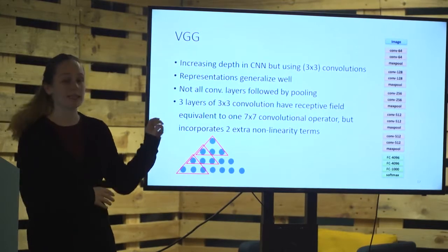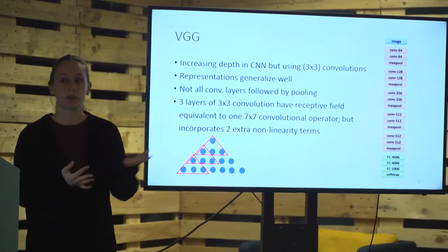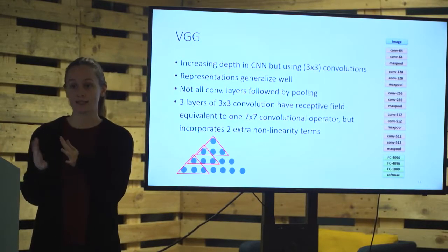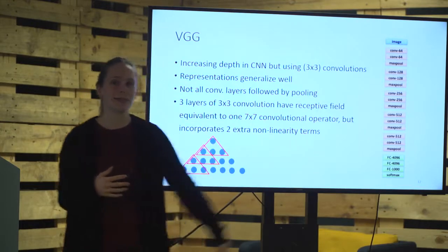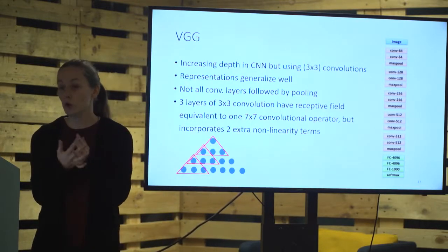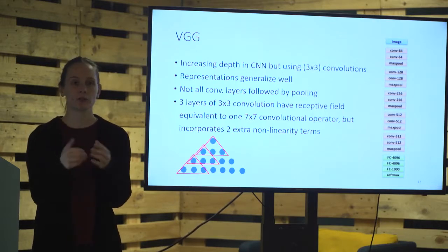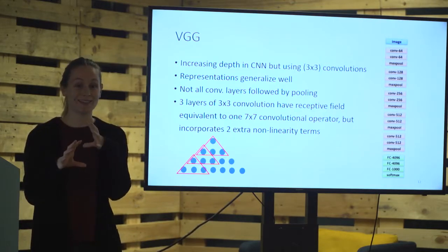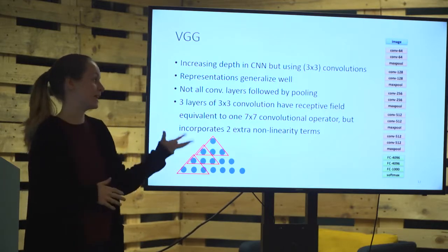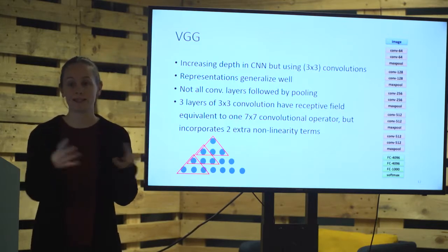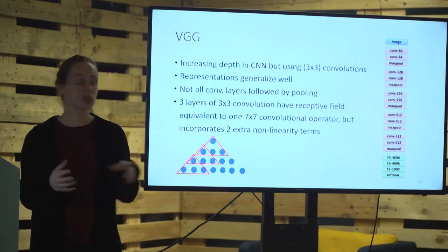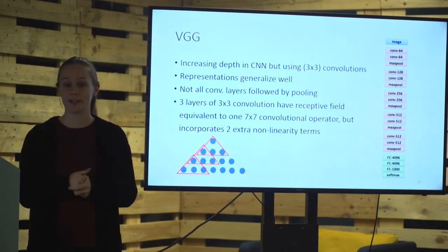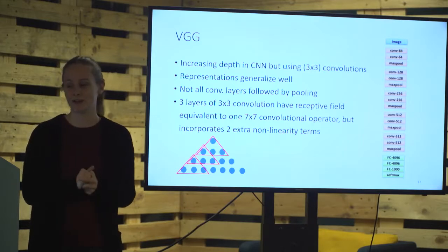The VGG net is very good for transfer learning. We can take the first convolutional layers and transfer them for a completely different task — we only need to retrain the decision-making layers at the end. If it was trained to look for animals, we could make it decide which movie a scene is from: if it picks out lions, the last layers learn to say 'that's the Lion King'; if it picks out crabs and fish, 'that's the Little Mermaid.' The first convolutional layers are so good at picking out different features that we can use them as a transfer learning network.